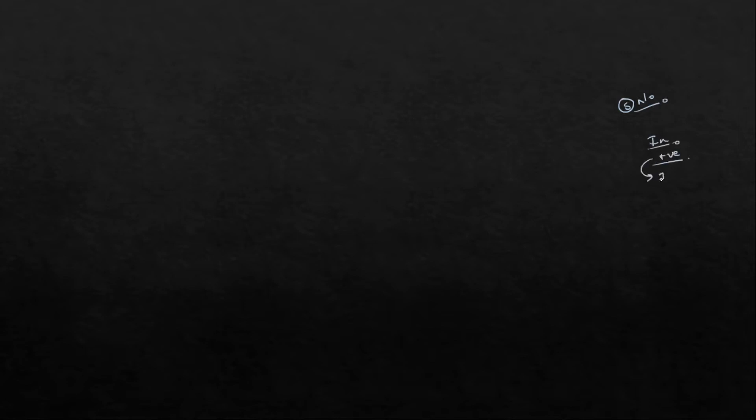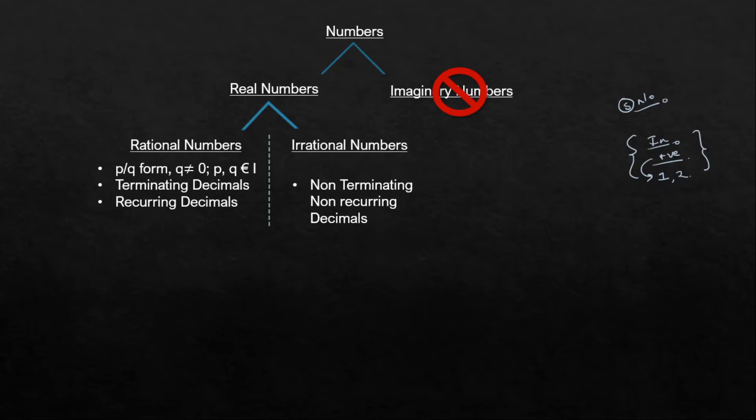If I ask you to think of five numbers, the possibility is that you came up with an integer — in fact a positive integer, and a single digit or two digit number. This happens because in our day-to-day life we are majorly concerned with these numbers. But is this the whole universe of numbers? The answer is no. Numbers can be divided into two broad groups: real numbers and imaginary numbers.